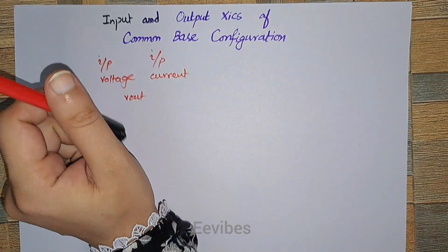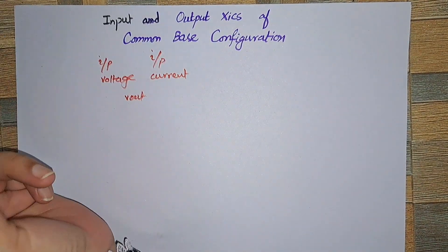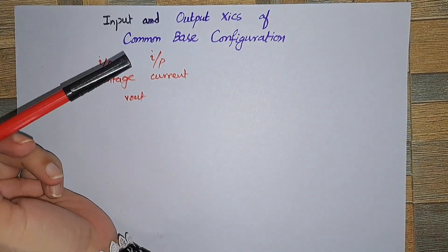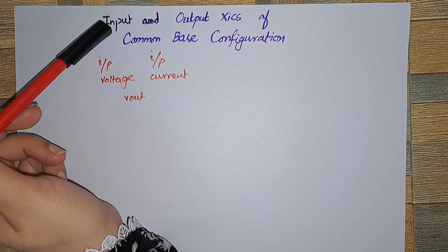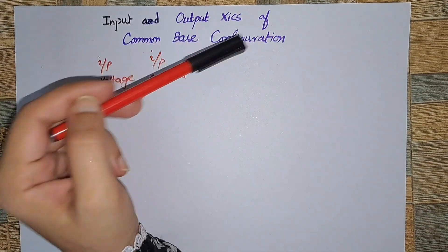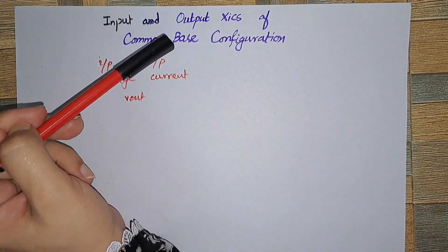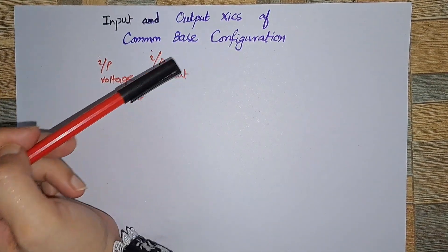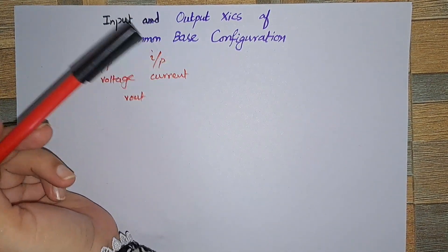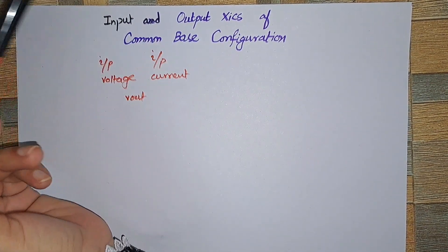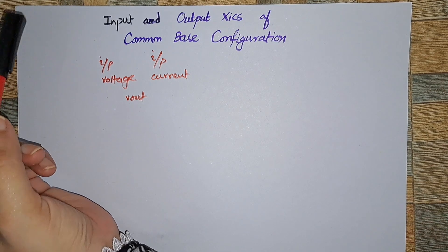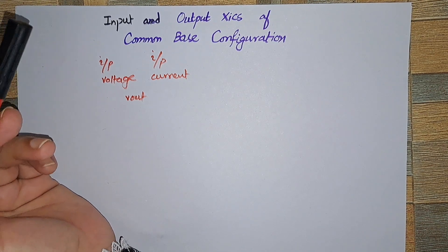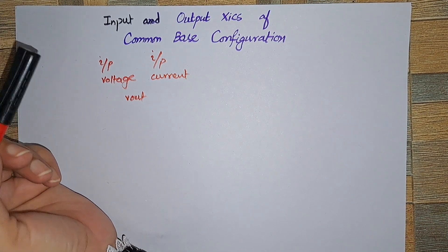Hi everyone, this is Asma Mushtaq from the double E-Vibes, and in this tutorial I'm going to explain the input-output characteristic curves of the common base configuration of a simple NPN transistor, or BJT.